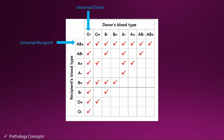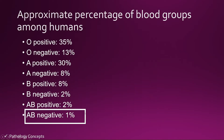Now if we add the Rh blood group in this scenario, then we can say that O negative blood type is the universal donor, because O negative blood group can be given to all from O negative to AB positive. And AB positive group is called universal recipient because the AB positive blood group can receive blood from all blood groups, O negative to AB positive. One important thing: a negative donor can be given to a positive recipient, but a positive blood group cannot be given to a negative recipient.